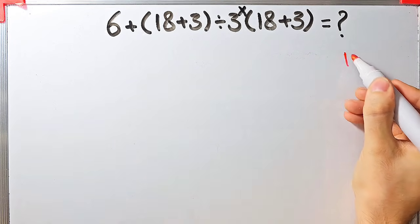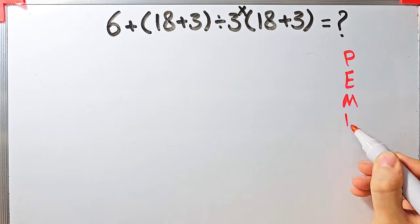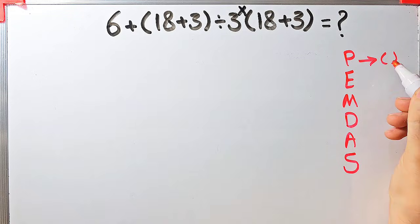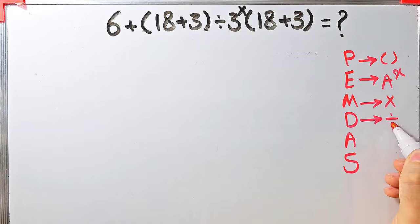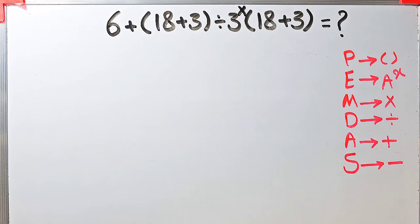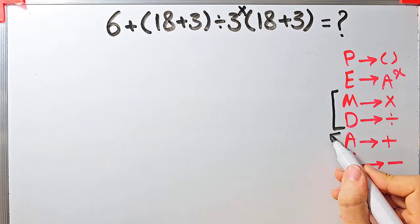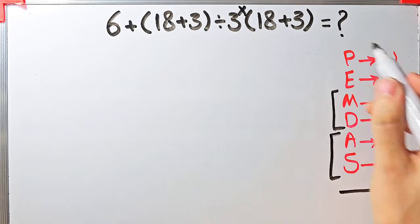To solve this question correctly, we need to follow the order of operations, which is PEMDAS. PEMDAS shows the priority of mathematical operations. In this rule: P stands for Parentheses, E stands for Exponent, M stands for Multiplication, D stands for Division, A stands for Addition, and S stands for Subtraction. Multiplication and division have the same level of priority; also addition and subtraction have the same level of priority. When we have both in an expression, we start from the left.